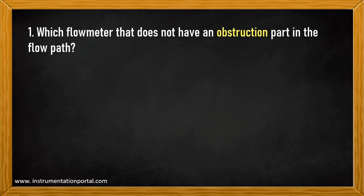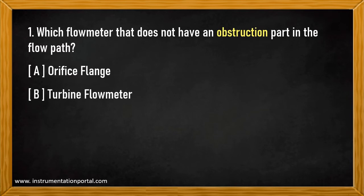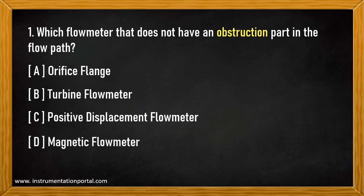Question number one: Which flow meter does not have an obstruction in the flow path? A. Orifice flange. B. Turbine flow meter. C. Positive displacement flow meter. D. Magnetic flow meter.